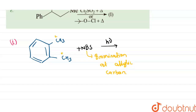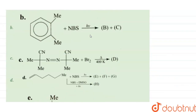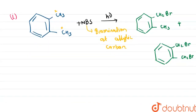Here we have two allylic positions — this one and this one — so either one or both of the allylic positions can be brominated. If one allylic position is brominated the product is CH₂Br·CH₃, and if both allylic positions are brominated the product is CH₂Br·CH₂Br. These are compounds B and C.